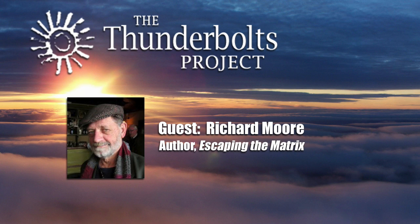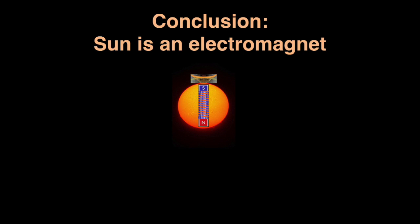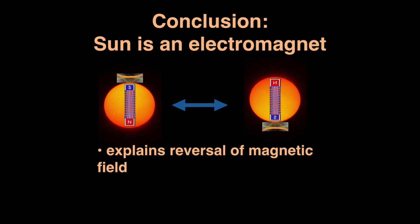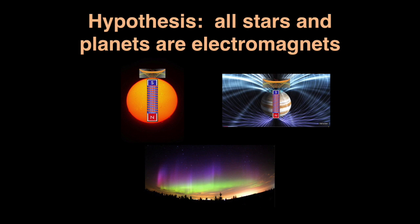So my conclusion from all of that is that the sun is an electromagnet, because that explains the source of the magnetic field and explains the reversal of the magnetic field. And all of these arguments with respect to the sun really apply to other stars, to planets, and to the earth. So the hypothesis I'm putting on the table here is that all stars and planets are electromagnets.